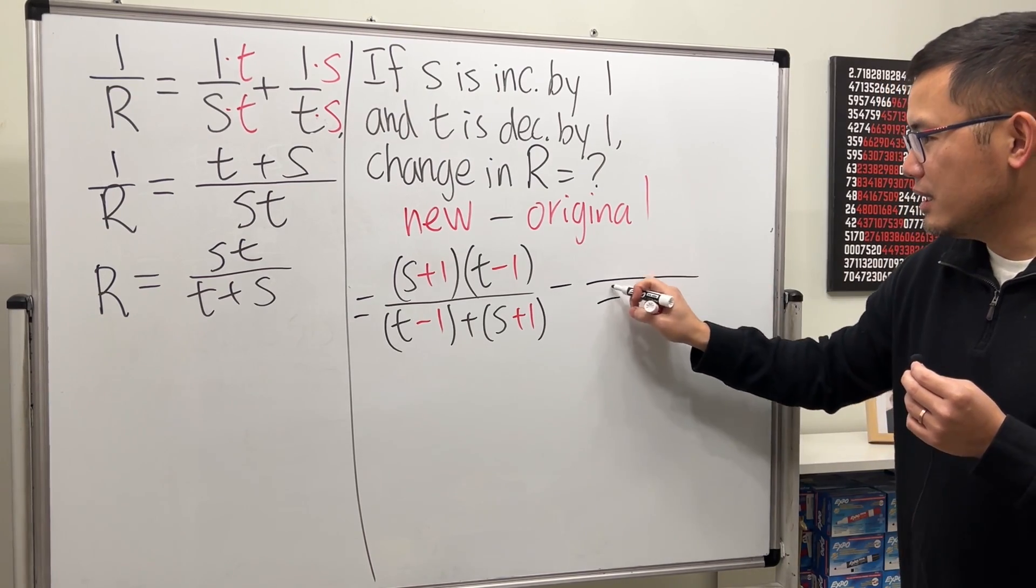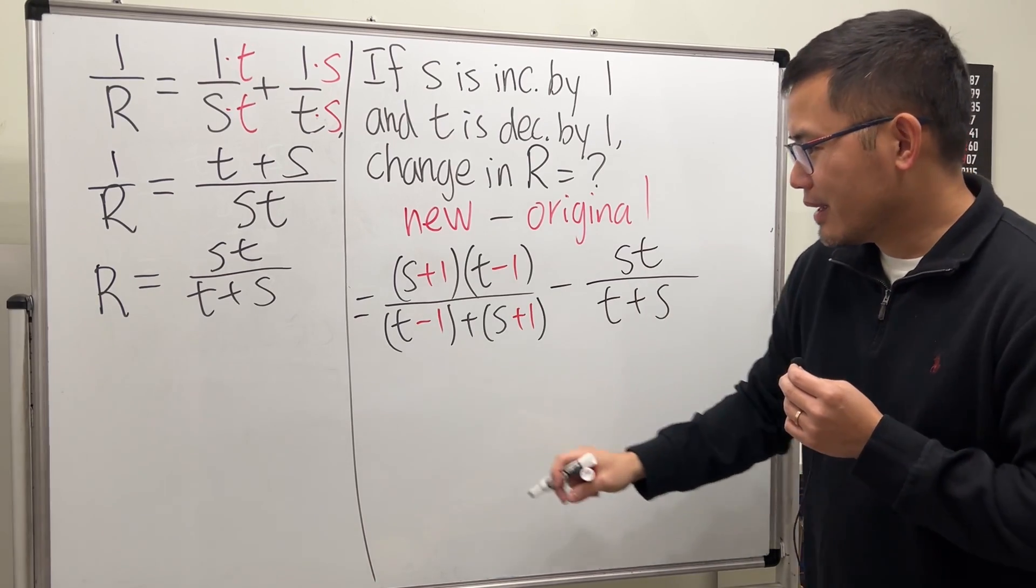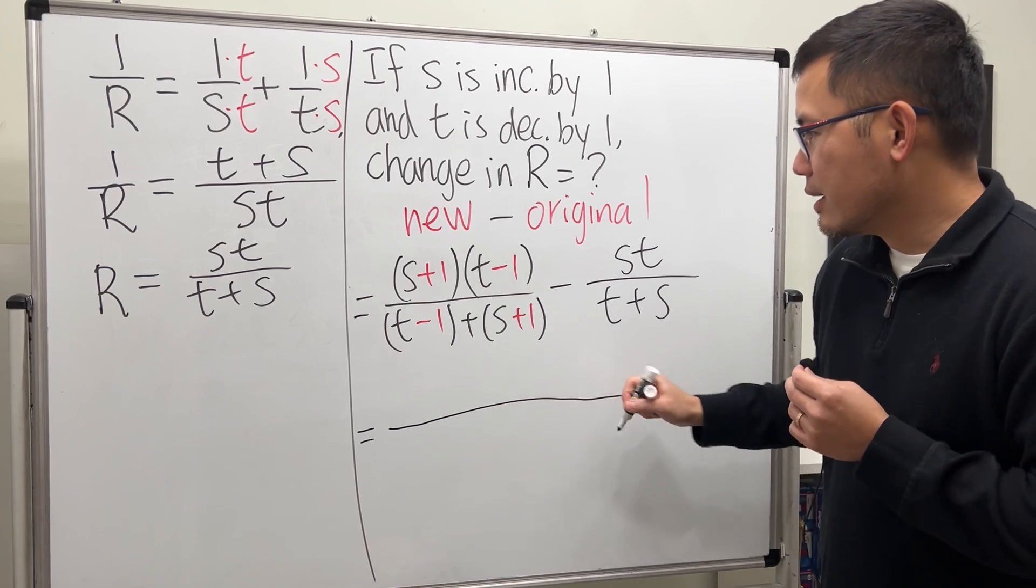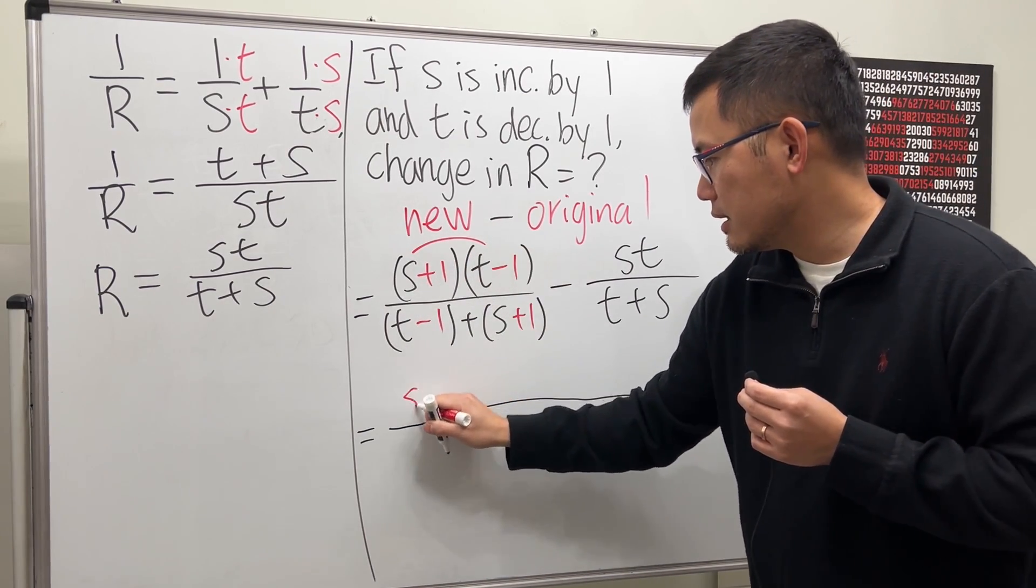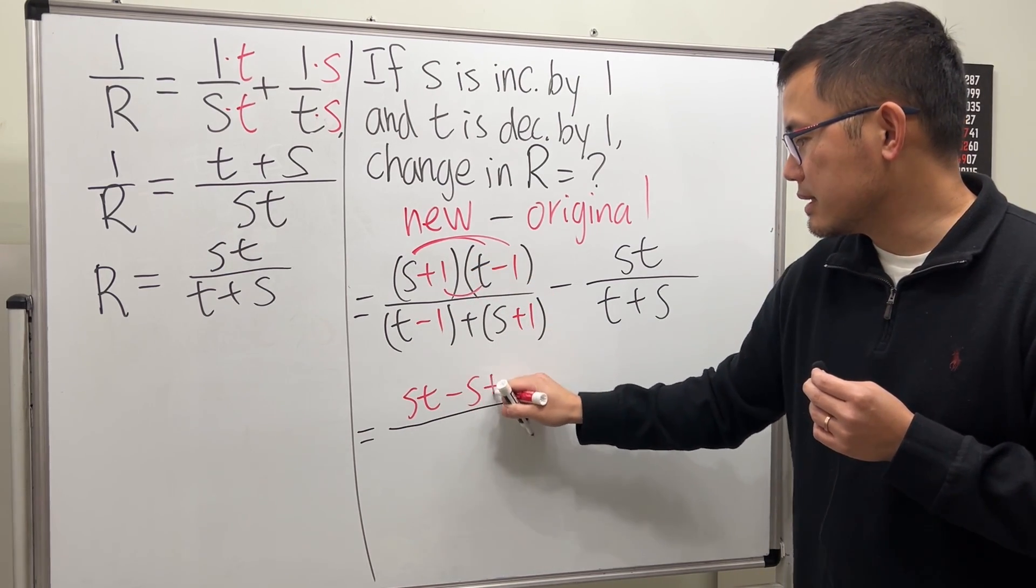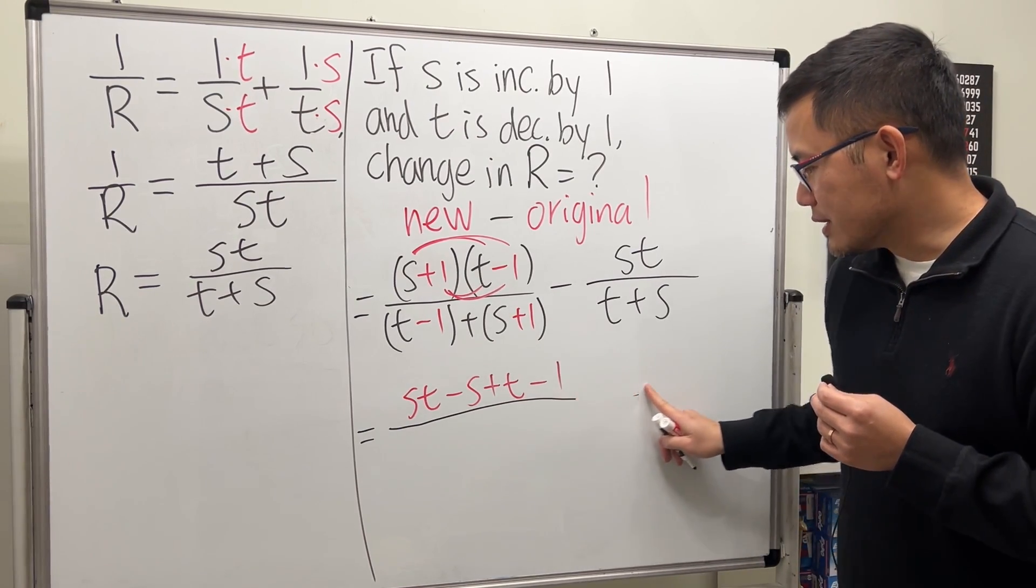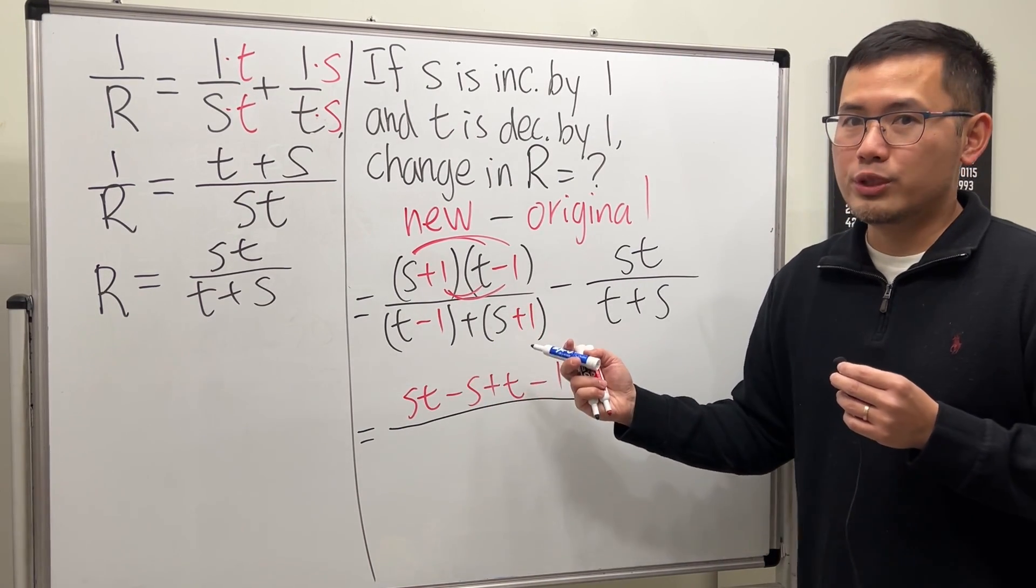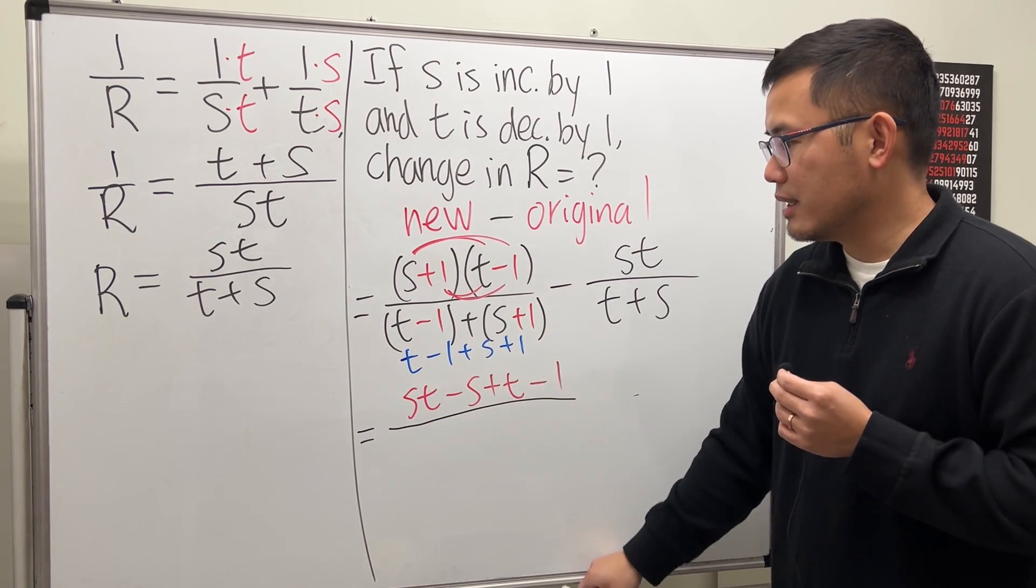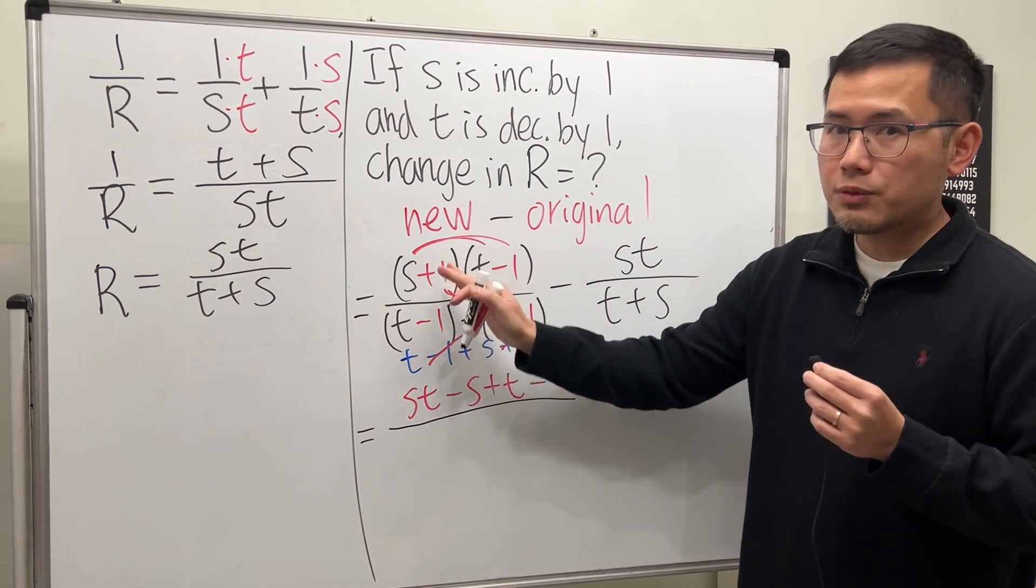Then minus the original, which is ST over T plus S. I'm going to distribute the top and you'll see this is ST minus S plus T minus one. The denominator is T minus one plus S plus one. Minus one and plus one cancel, so the first fraction has T plus S for the denominator.